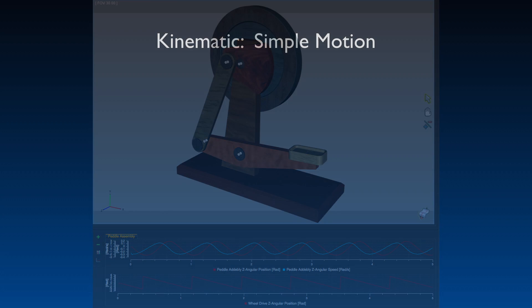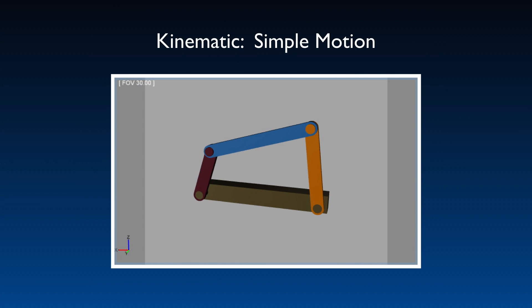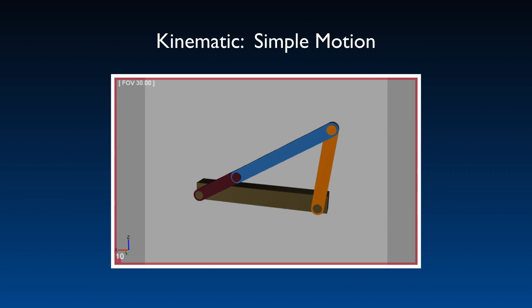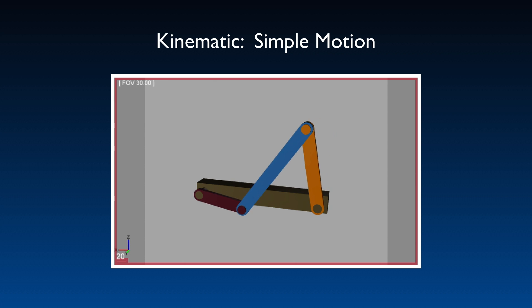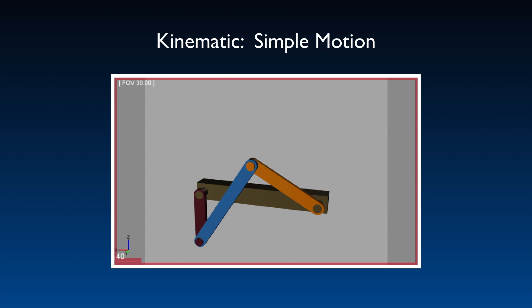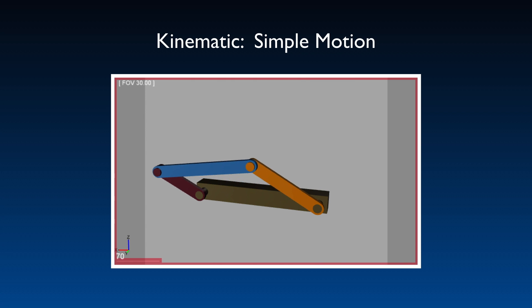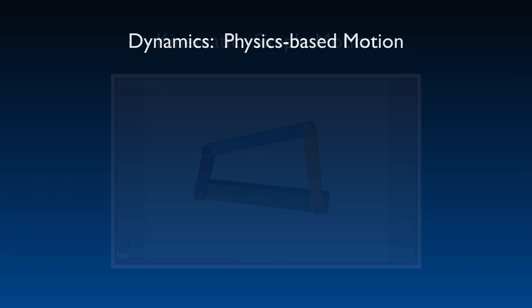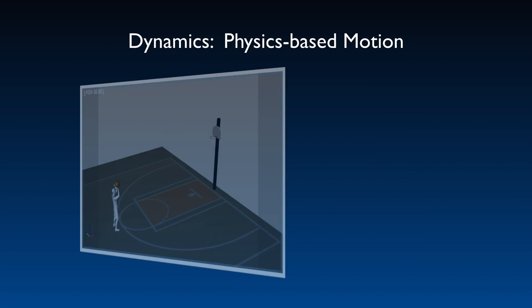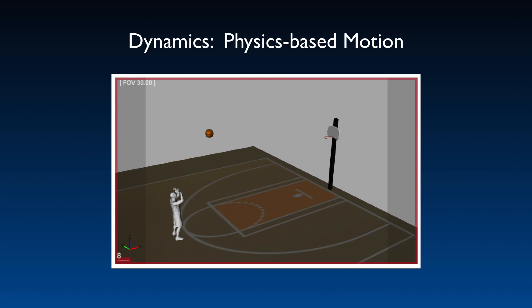Studies can be kinematic, which simply demonstrate the motion of the joints without regard to the physics involved. Or they can be dynamic, which calculates the cause of the motion, including forces, torques, inertia, and gravity.